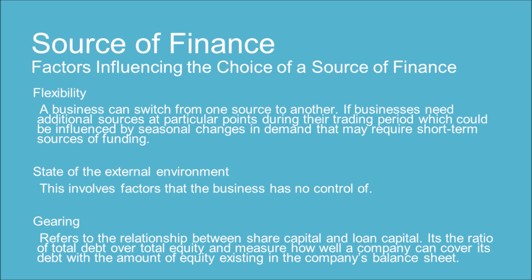The trading state of the external environment involves factors that the business has no control of. Gearing refers to the relationship between share capital and loan capital. It is the ratio of total debt over total equity and measures how well a company can cover its debt with the amount of equity existing in the company's balance sheet.